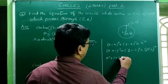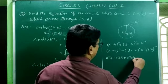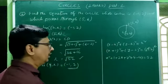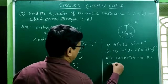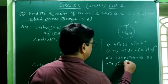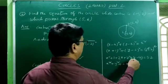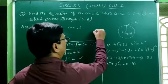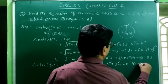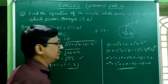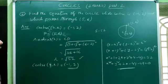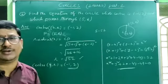Simplifying: x² + 1 + 2x + y² + 4 − 4y = 52. So x² + y² + 2x − 4y + 5 − 52 = 0, giving x² + y² + 2x − 4y − 47 = 0. This is the equation of the circle whose center is (−1, 2) and which passes through (5, 6).